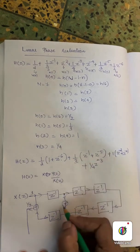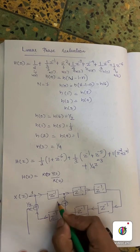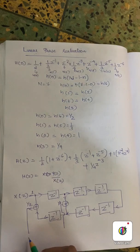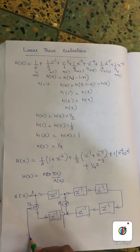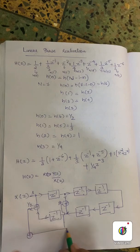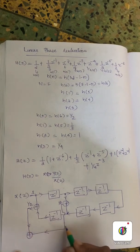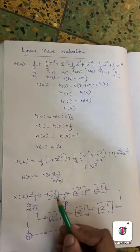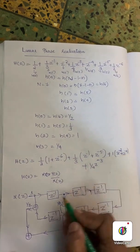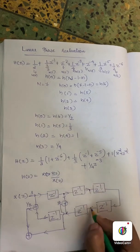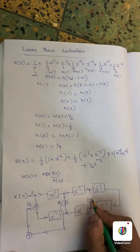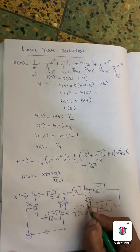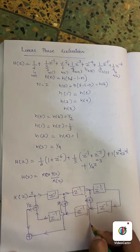Now we multiply all the taps. We combine the symmetric pairs: z raised to minus 2 plus z raised to minus 4. Here z raised to minus 2 corresponds to positions 1, 2, and z raised to minus 4 corresponds to positions 1, 2, 3, 4. Then we combine the two and the multiply factor is 1.